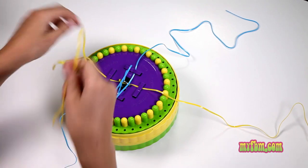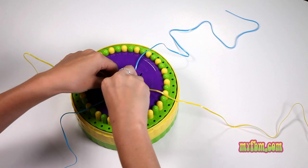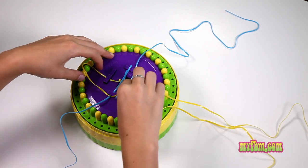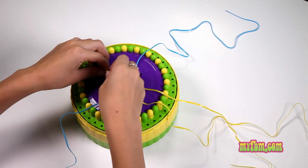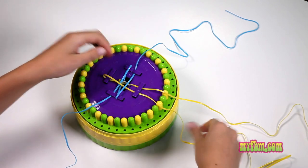Take your number seven, move over the number six and under the number five. Make sure your laces are straight and then place it under the number four.